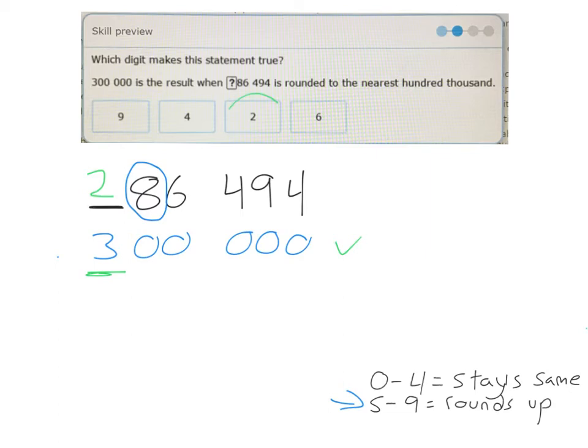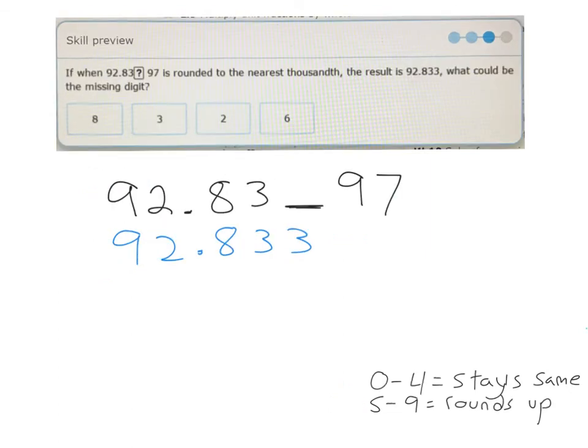This example says, if when 92.83X97 is rounded to the nearest 1,000th, the result is 92.833. What could be the missing digit? So this is what the number looked like before. We rounded and it got to 92.833.